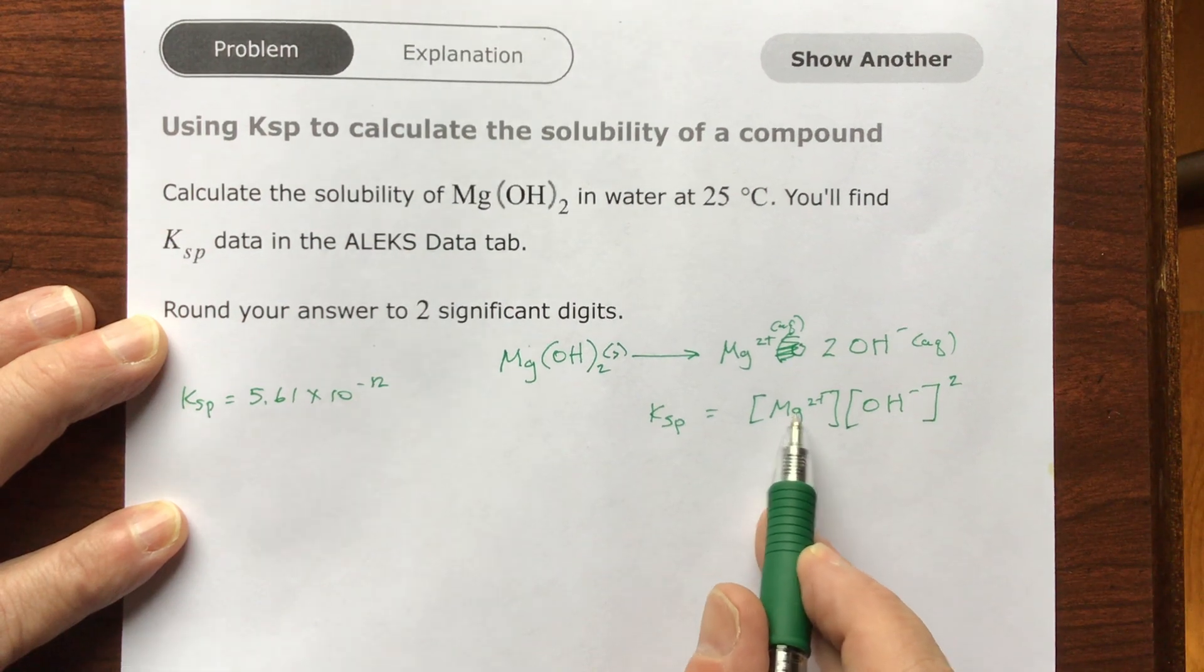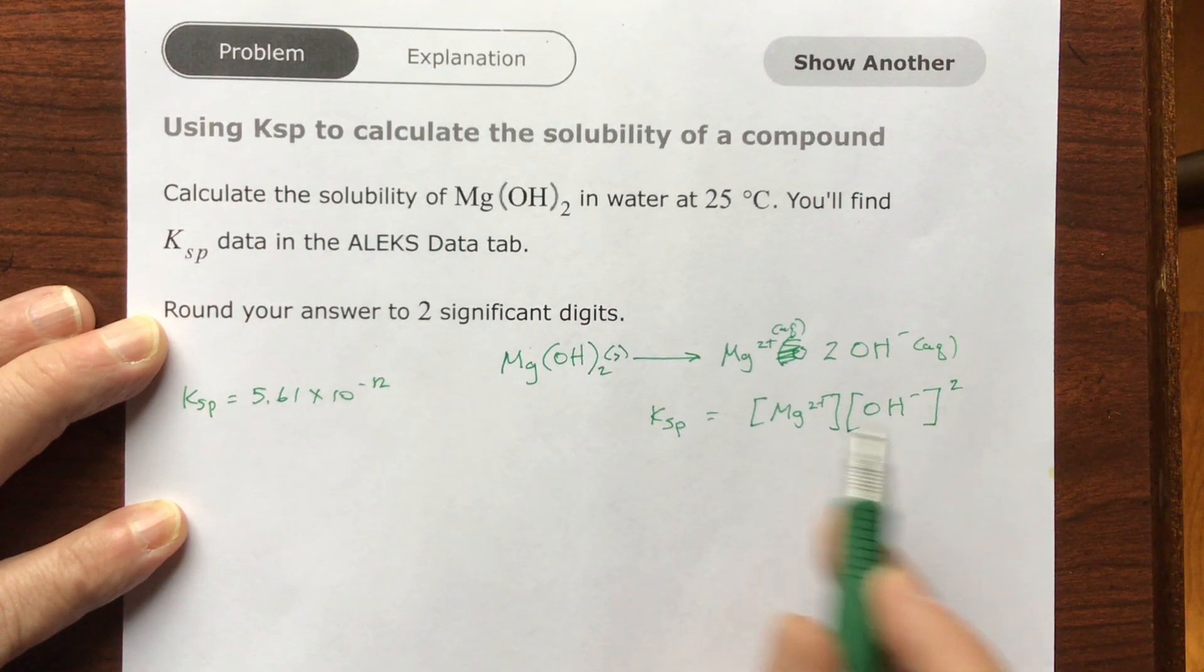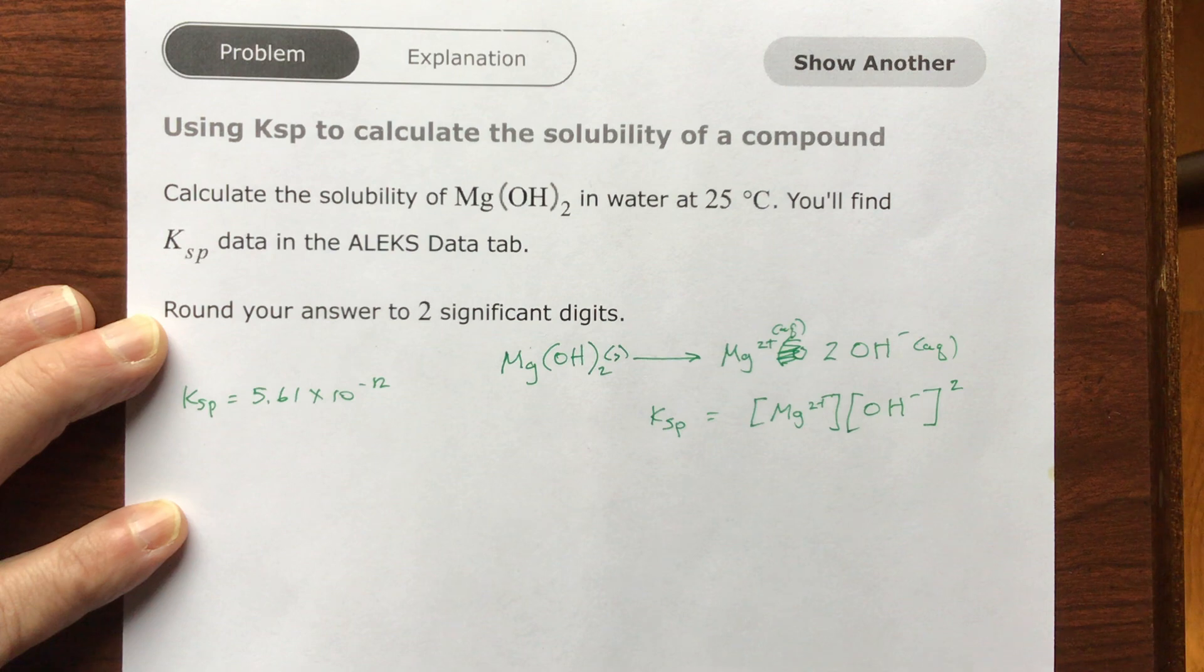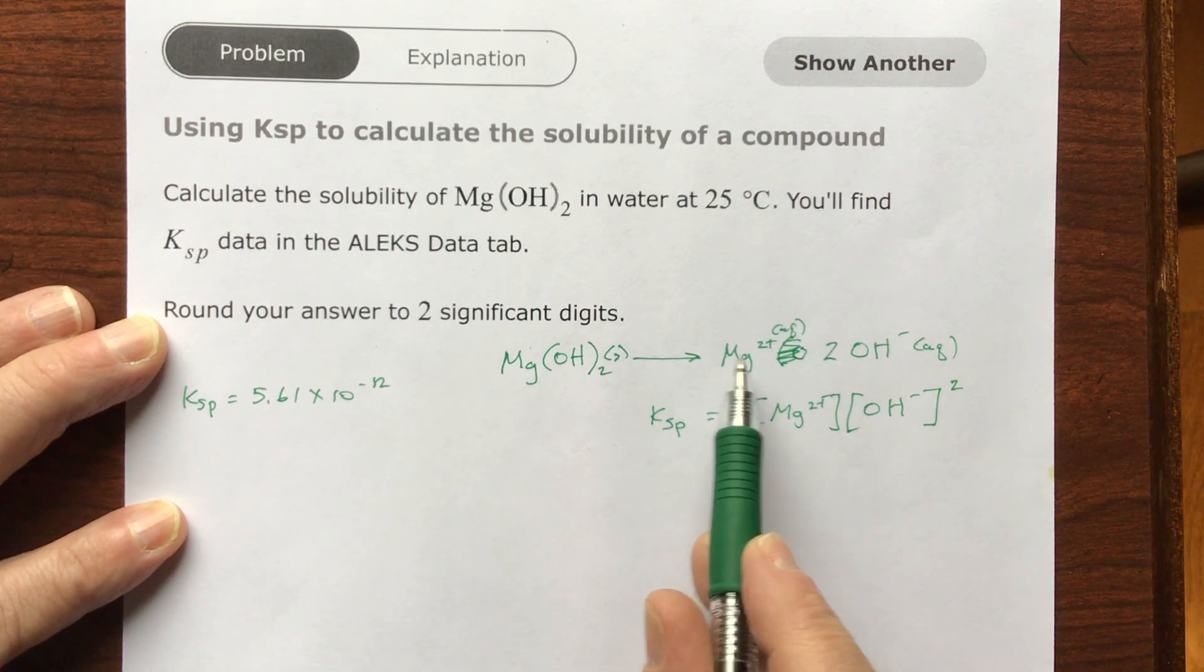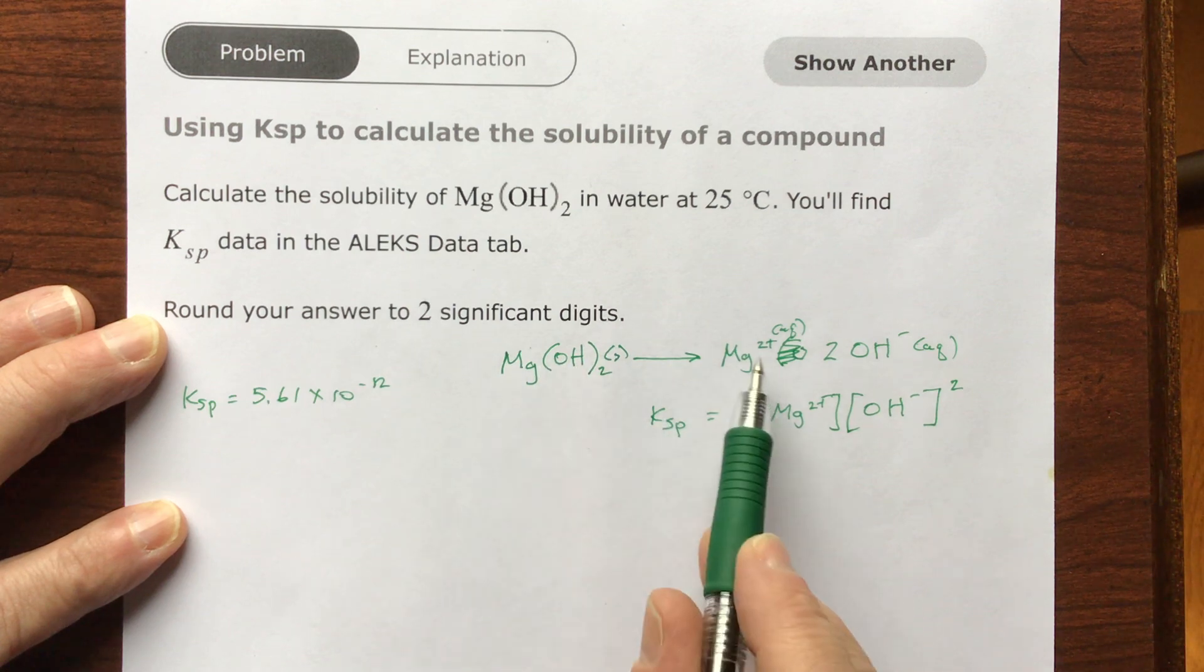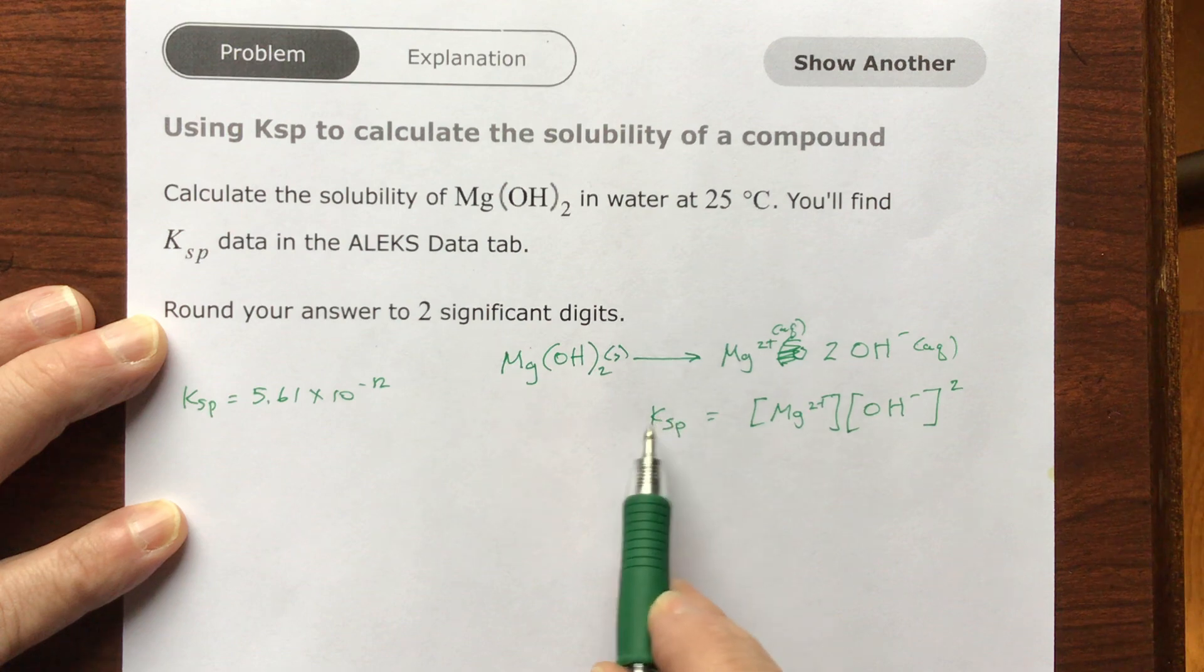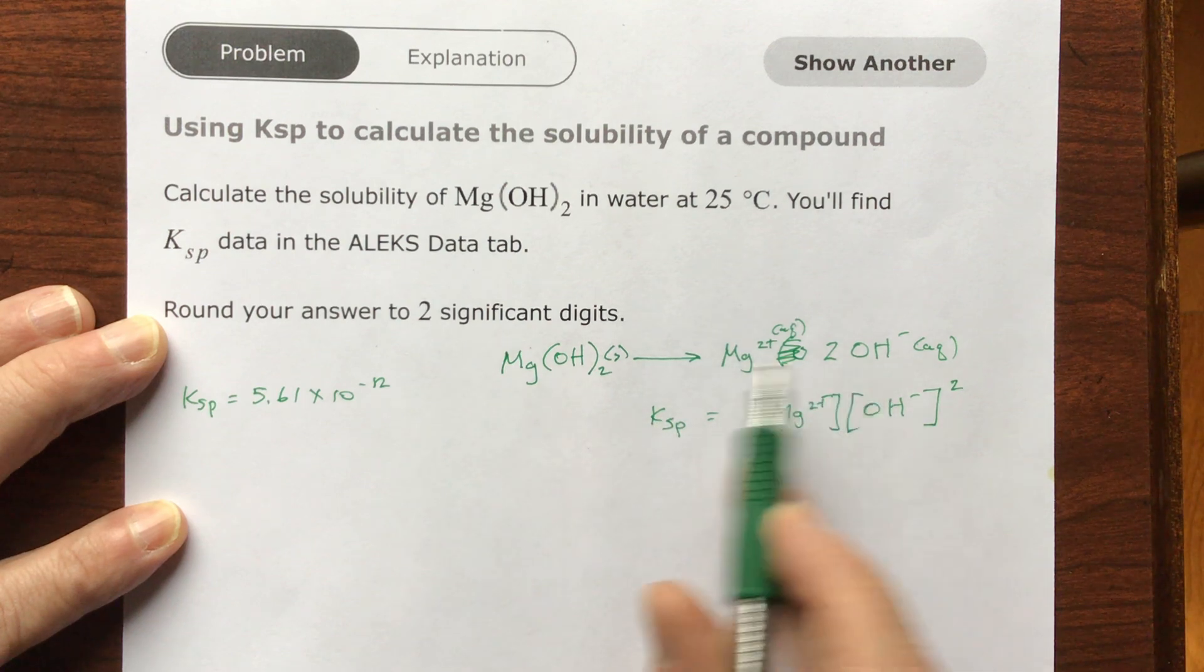Now, if I knew the concentration of this and I knew the concentration of this, then I could find whatever I'm looking for, but the problem is that at the beginning, I've got none of this. I have some powder, I put it in the water, and at that very instant, I've got none of this and none of this.